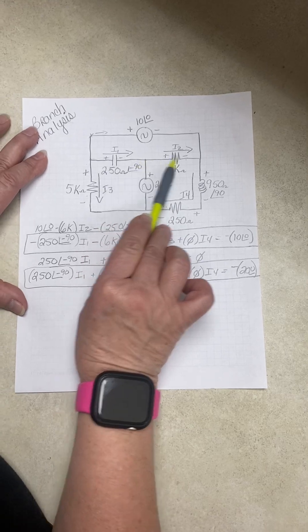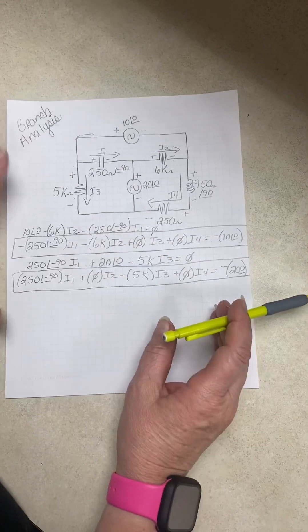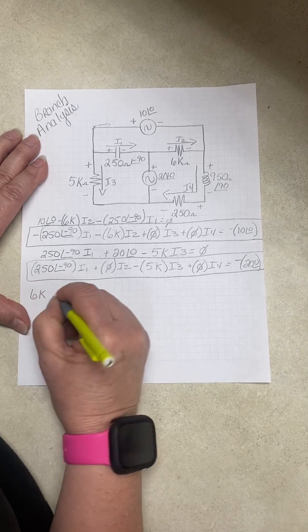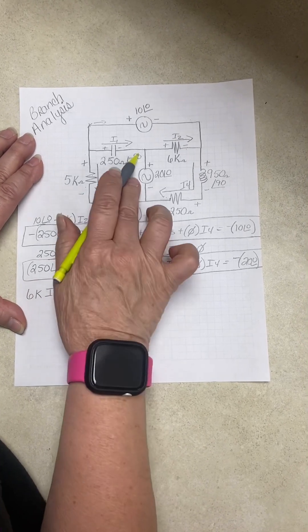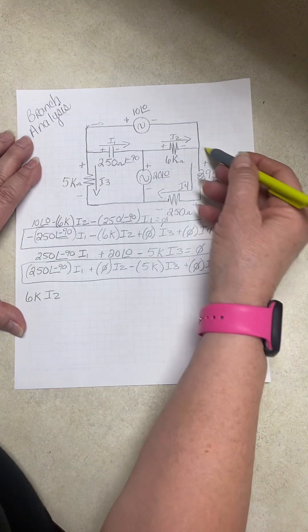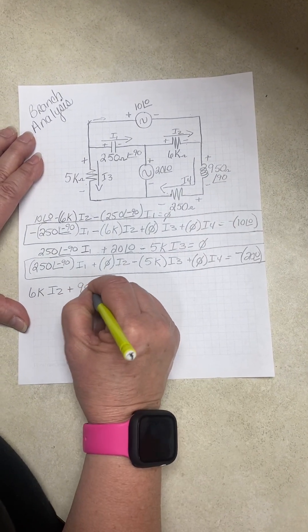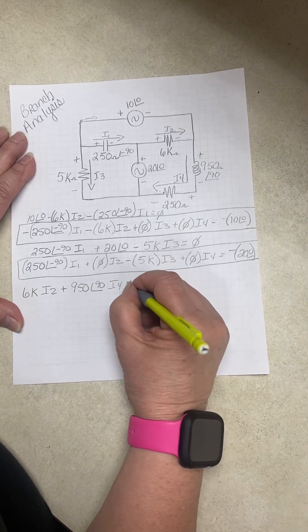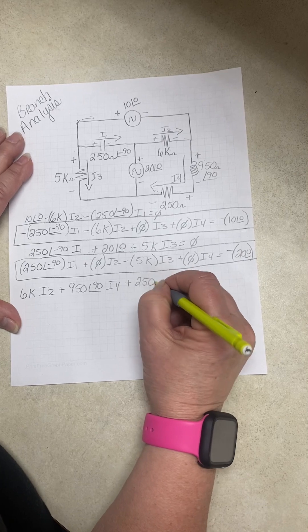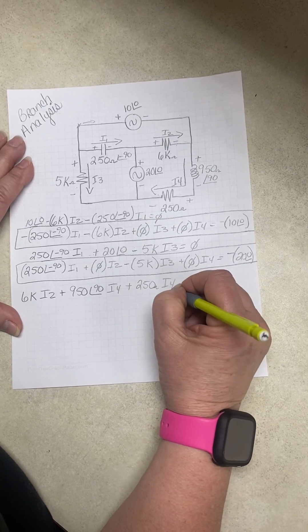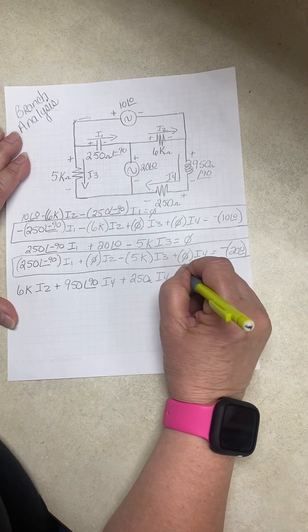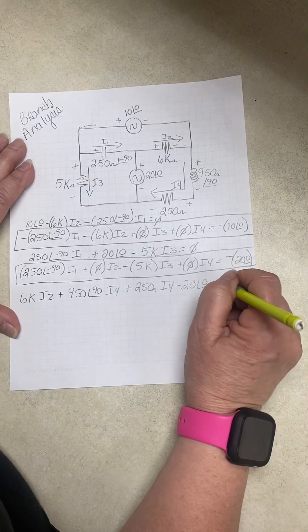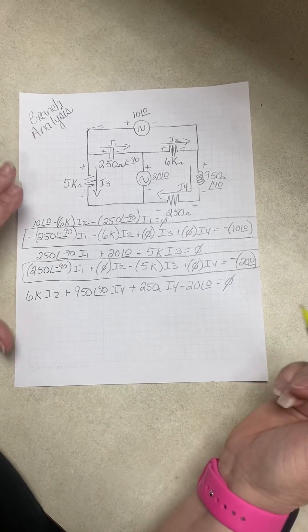Third equation, we're going to start here, go around this way. So we have 6K I2, and we're entering the positive side. Plus 950 at 90, I4 plus 250 ohms I4 minus 20 at zero, and now we're back here. So we set it to zero, now we fix it up.